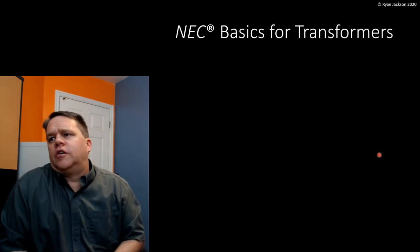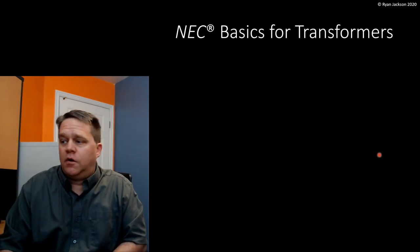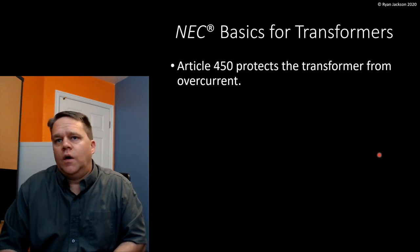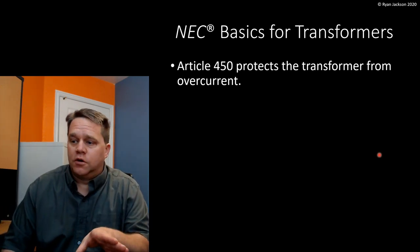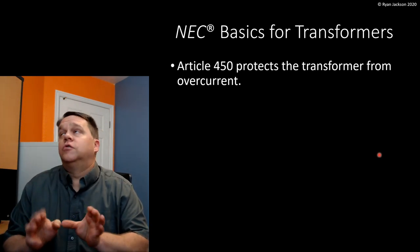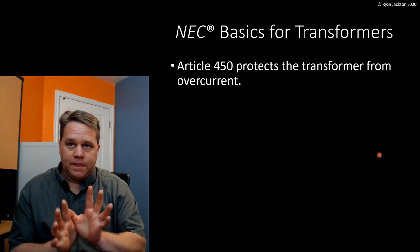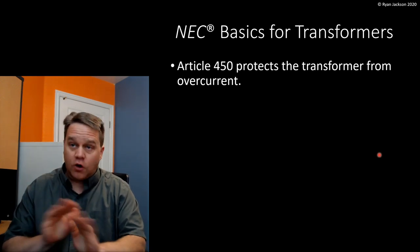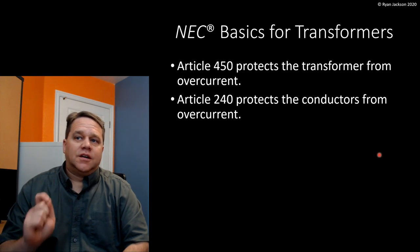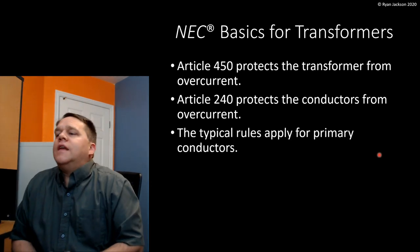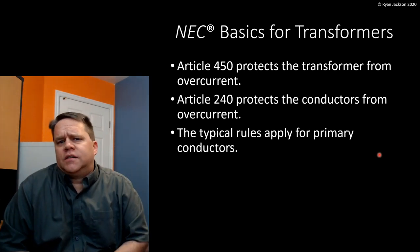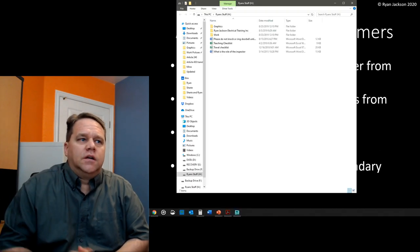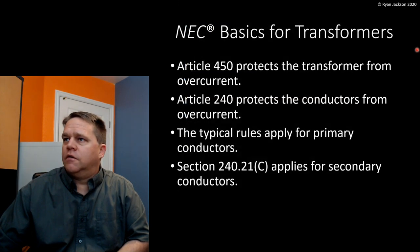Let's get into some code rules. Article 450 protects the transformer from overcurrent — that's all it does as it relates to overcurrent protection. It protects the windings. It doesn't protect the primary conductors or the secondary conductors — just the transformer itself. Article 240 protects the conductors from overcurrent. The primary is easy — there's nothing special about protecting transformer primary conductors. It gets more involved when it comes to protecting secondary conductors from overcurrent.